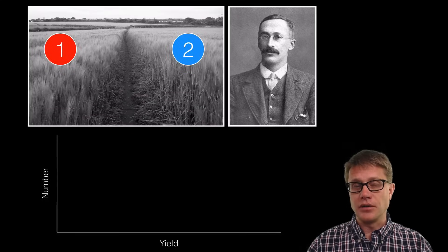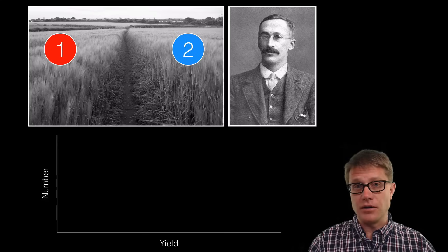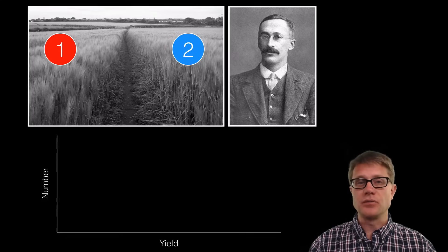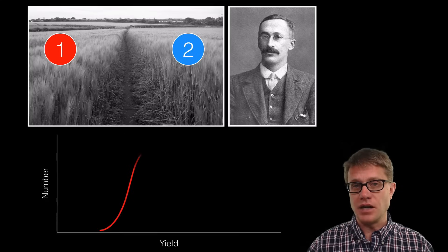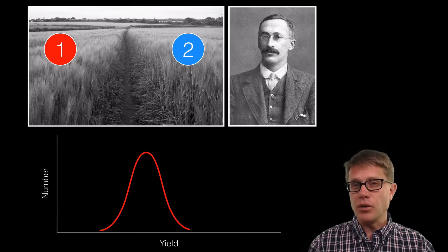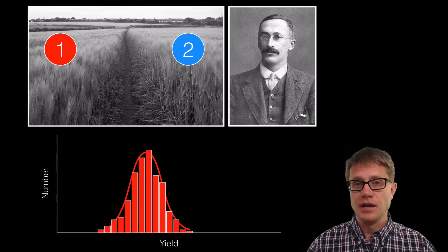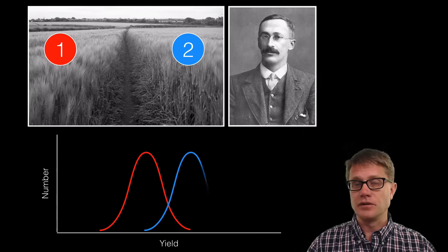Imagine I have two fields of barley, field one and field two, and I want to compare them. But I don't want to cut down the whole field, I just want to do some samples. So I could get a sample from field one. It won't be a perfect normal distribution, it's going to be more of a histogram. And then I'm going to get a sample from field two.